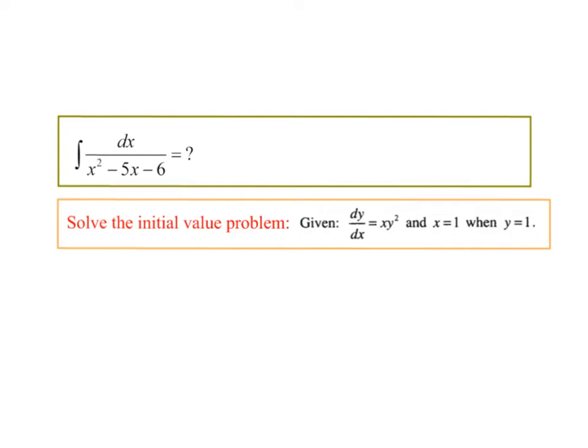In this video we're going to look at a couple review topics for the AP exam as well as talk a little more about logistic equations. So first, this first integral — substitution won't work because if u is x squared minus 5, we don't have du. So we go to partial fractions.